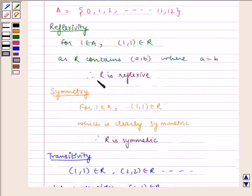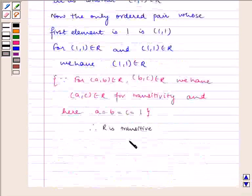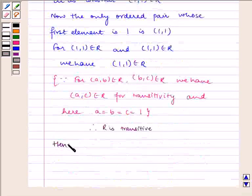Now, since R is reflexive, R is symmetric and R is transitive, hence R is an equivalence relation.